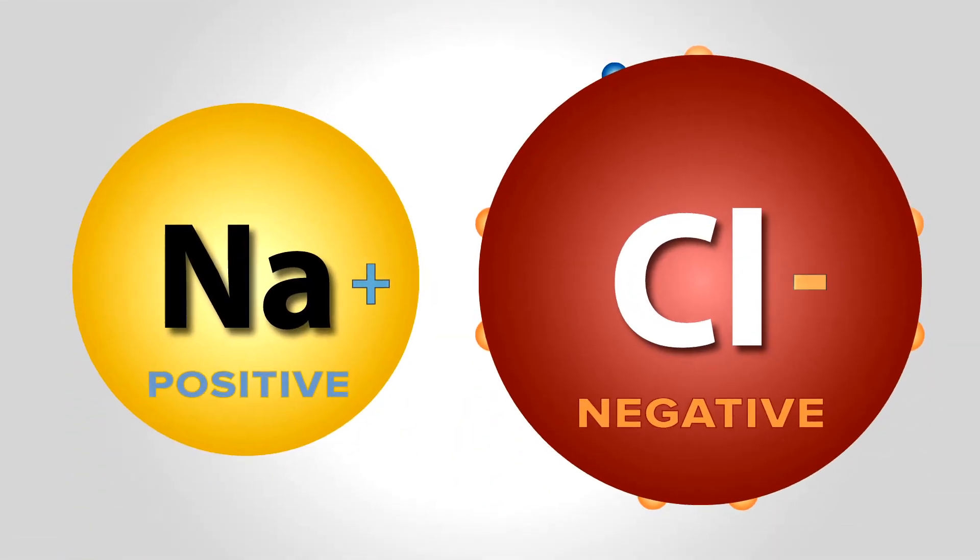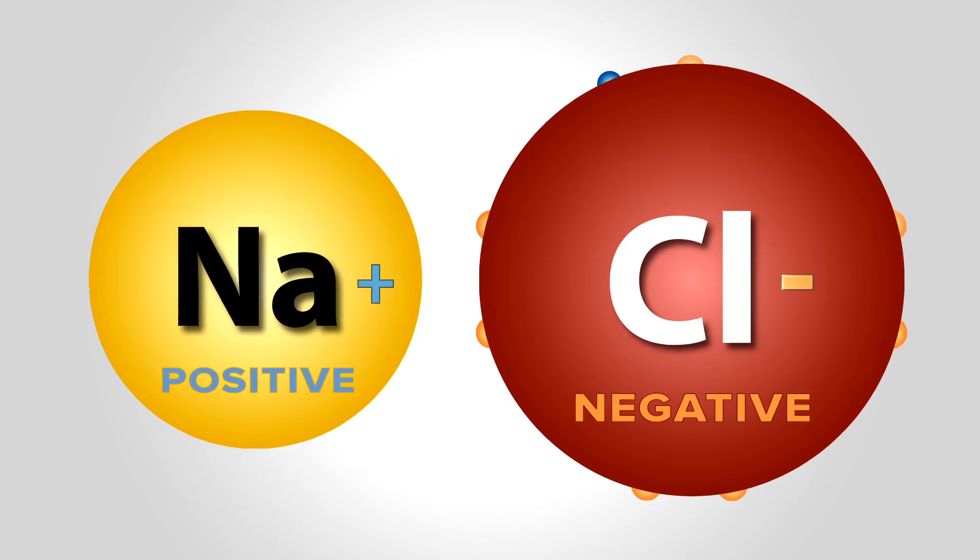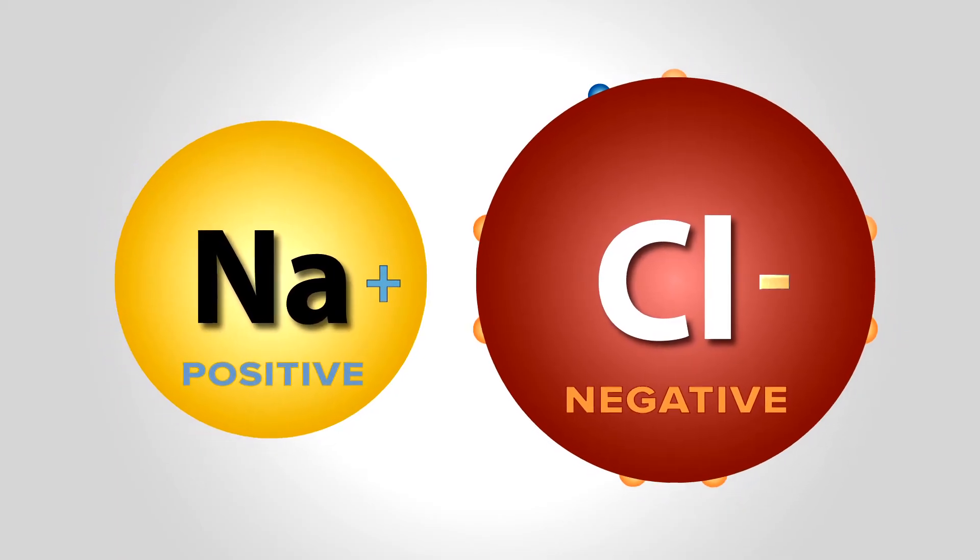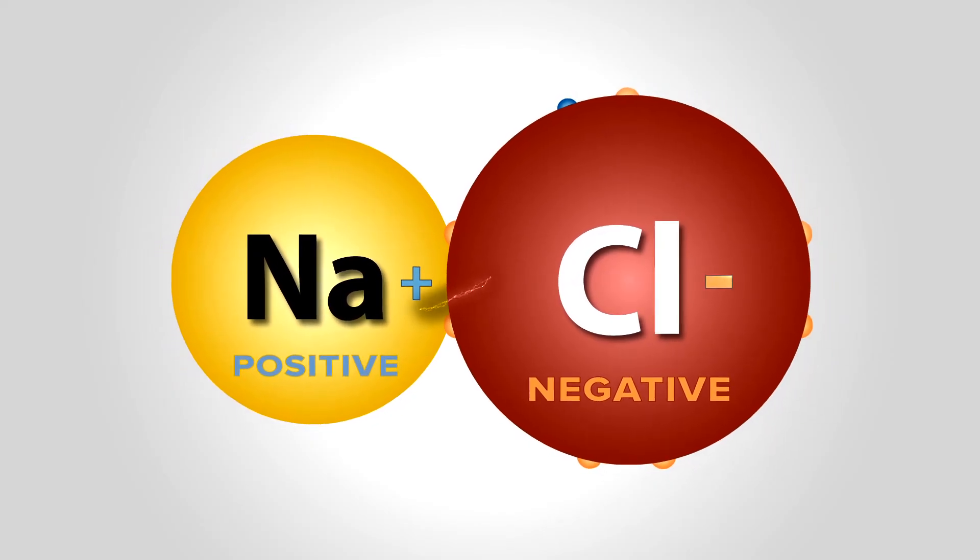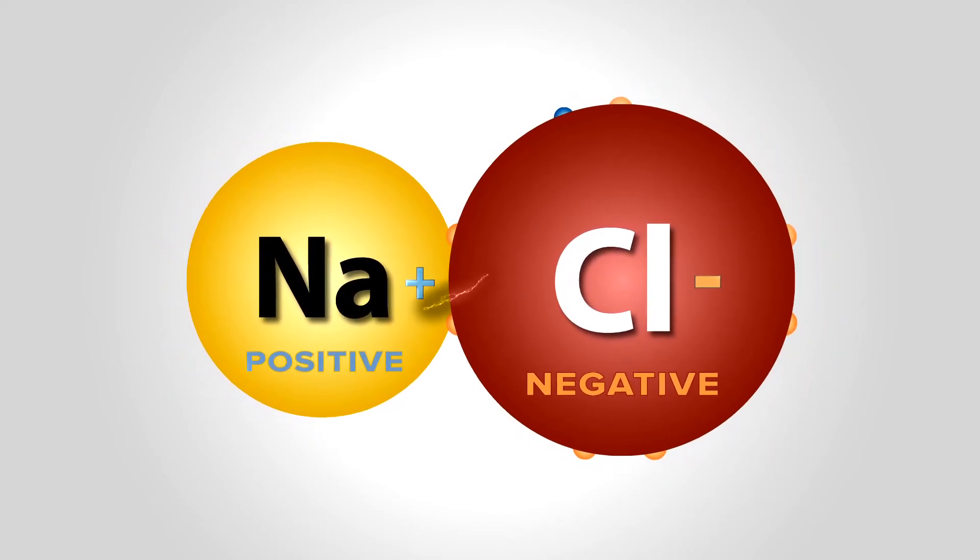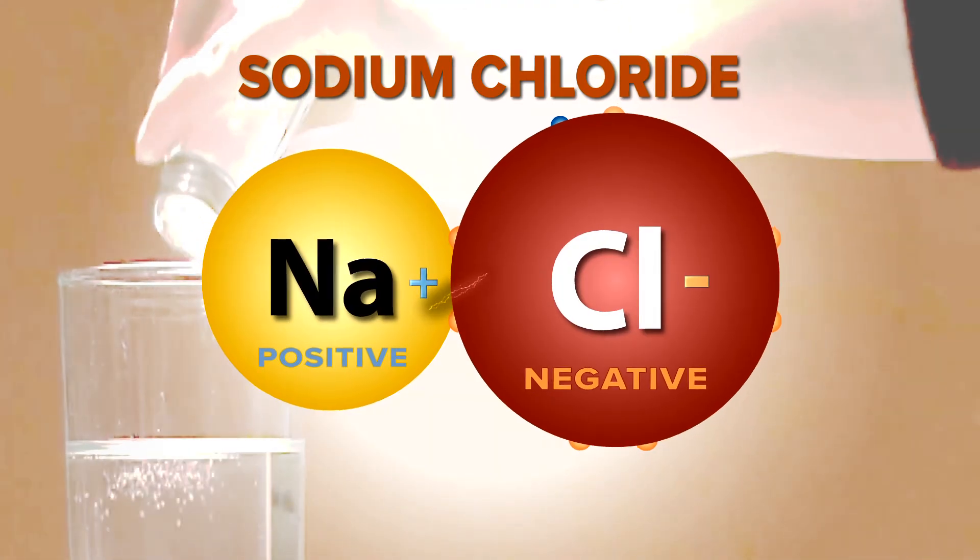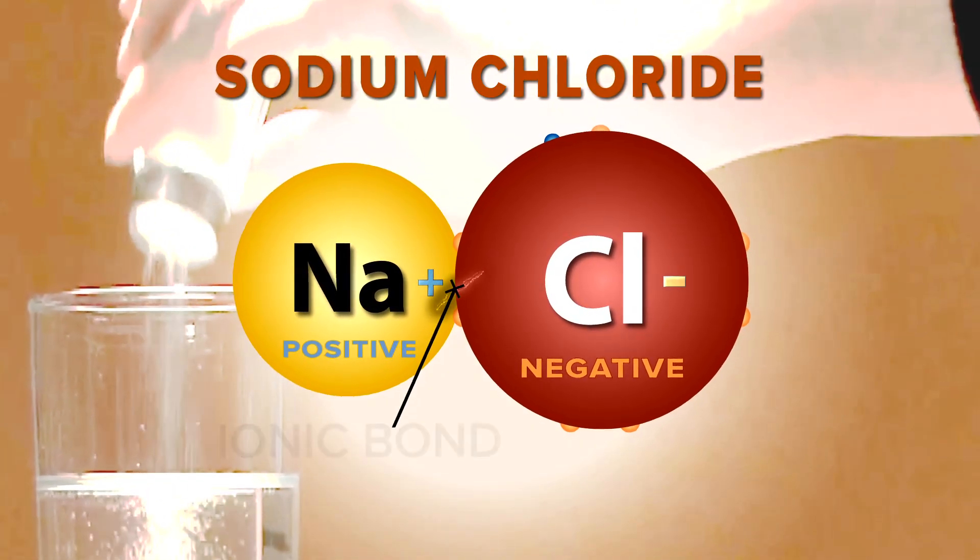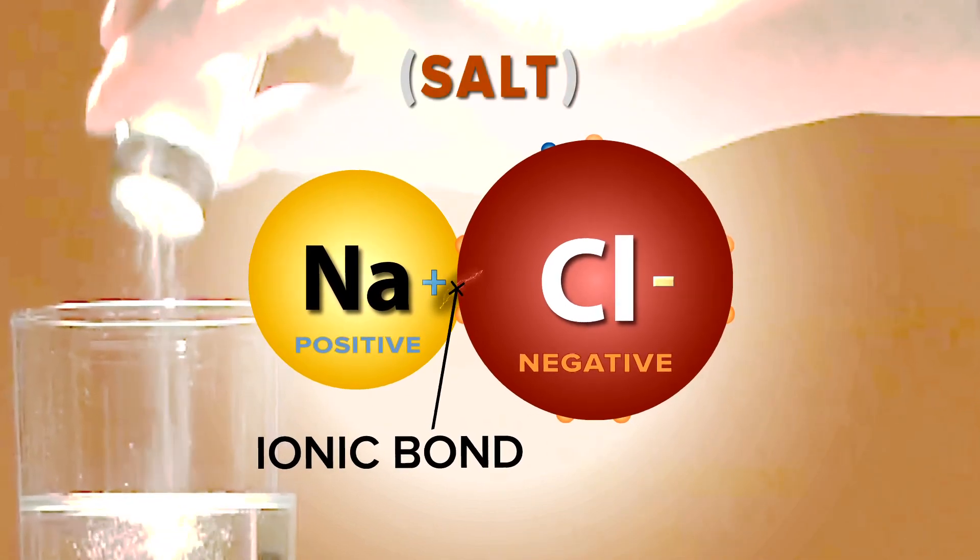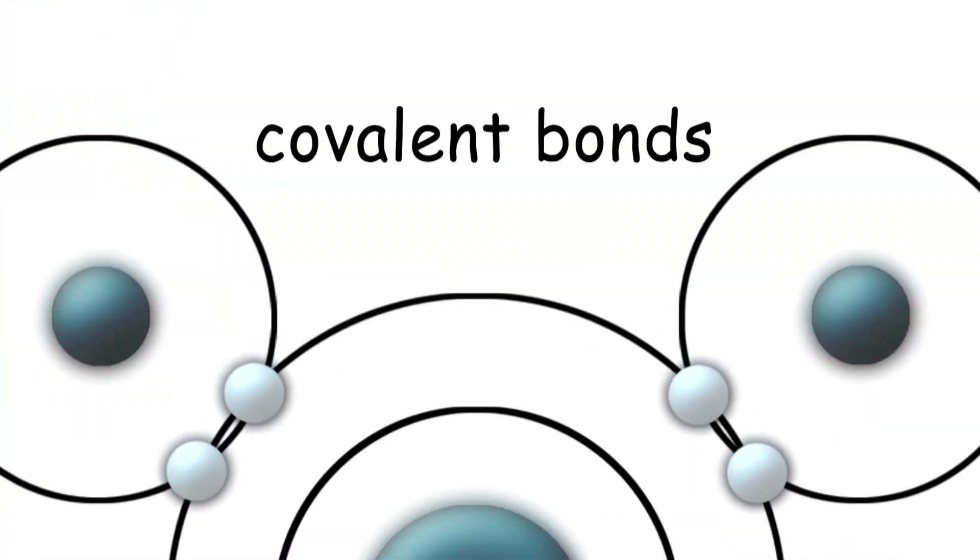You probably know opposites attract. Positive sodium and negative chloride ions are strongly attracted to each other. And that attraction is what bonds Na plus and Cl minus ions together to form NaCl, sodium chloride. Most chemical bonds are ionic, like the ones that form salt, or covalent.